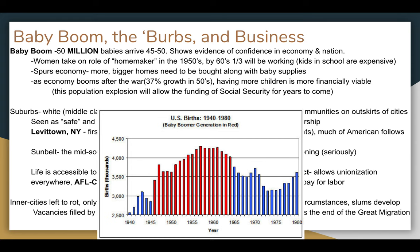We've talked about the baby boom before — when we did Social Security in the 1930s under Roosevelt and how the baby boom is going to support Social Security for a long time. The baby boom is going to result in 50 million plus babies being born in the half decade following the end of World War II, roughly 1945 to 1950 for that first big push. But as you can see on the chart, the baby boom is really going to go up until the early 1960s, contiguous with the timeline we're dealing with here.